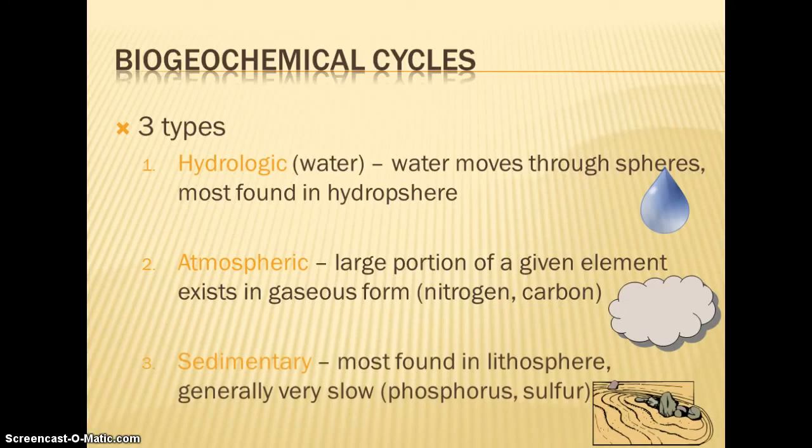The third type is sedimentary cycles. Most are found in the lithosphere. These are our slowest. Phosphorus and sulfur fit this category. Now phosphorus is the only one of our cycles that does not enter the atmosphere. Sulfur does, but most of these are found in the lithosphere.